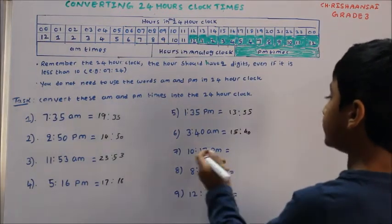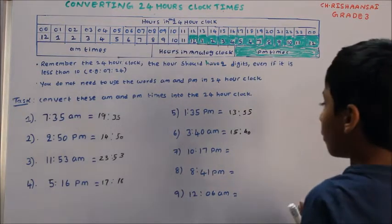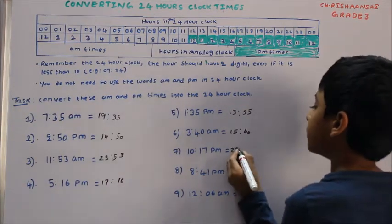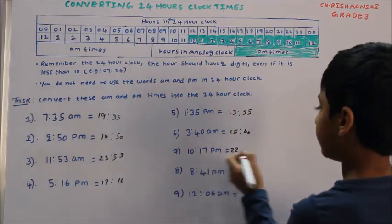10:17, here is 10, so we have to write 22 here. Because there is 22 up and then we have to write 17.